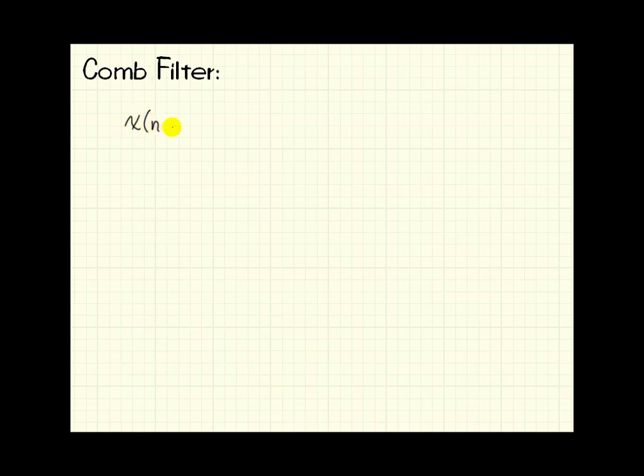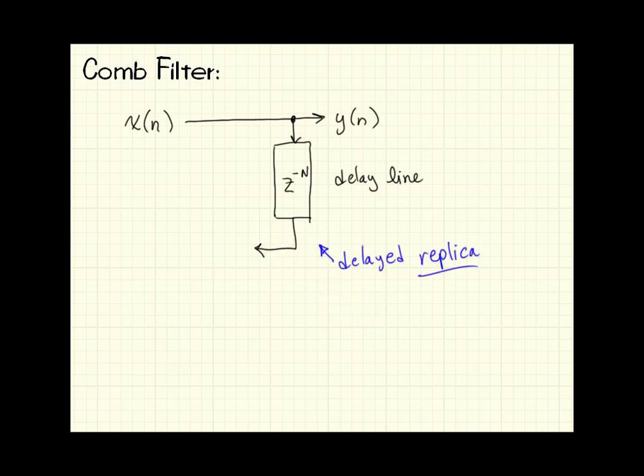So the comb filter is actually a circuit that does this for us. To get our direct path, I will show the input going directly to the output, but then we need to delay the input by n cycles. So this is an n sample delay line, and that replicates our input.